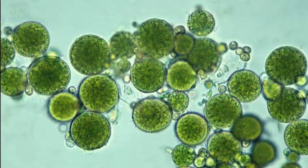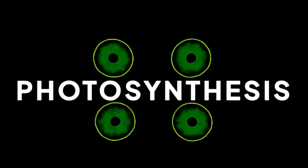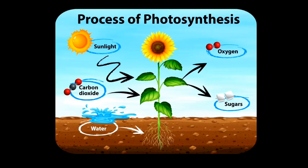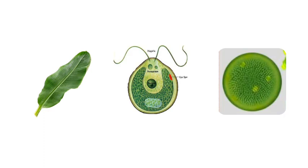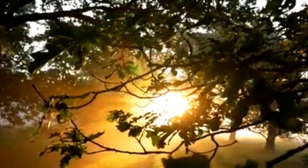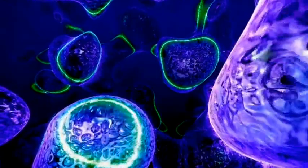Like plants, algae also make their food and generate energy through the process of photosynthesis. Photosynthesis is the biochemical process by which plants, algae, and some bacteria convert sunlight into chemical energy in the form of carbohydrates.